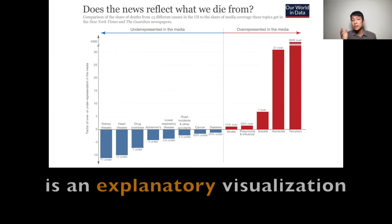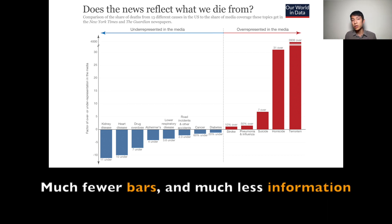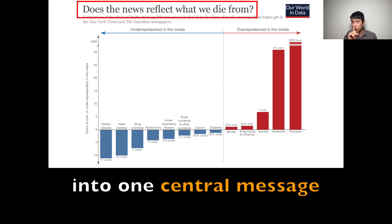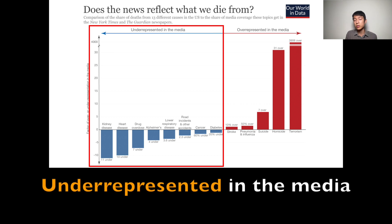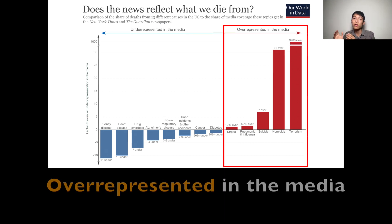This, on the other hand, is an explanatory visualization. Much fewer colors, much fewer labels, much fewer bars, and much less information, because we've condensed all that data into one central message. In the blue, we have all the categories underrepresented in the media. In the red, we have all the categories overrepresented in the media.